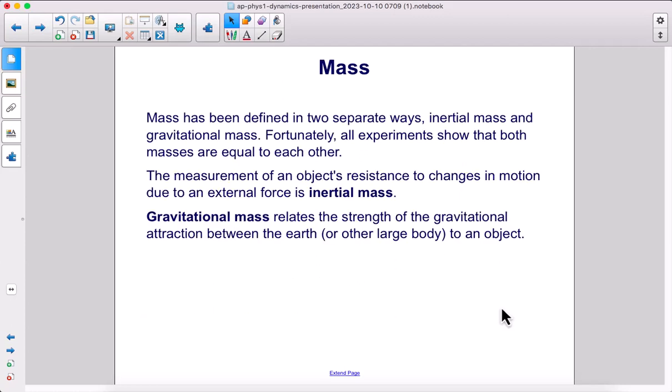Mass has been defined in two separate ways, inertial mass and gravitational mass. Fortunately, all experiments show that both masses are equal to each other. The measurement of an object's resistance to changes in motion due to an external force is inertial mass, whereas gravitational mass relates the strength of the gravitational attraction between the Earth or other large body to an object.